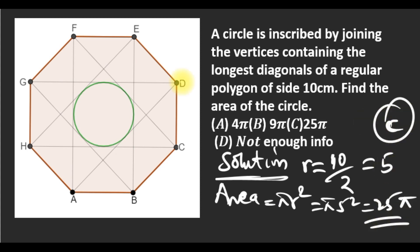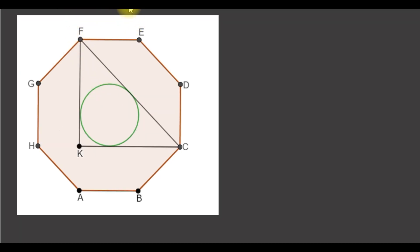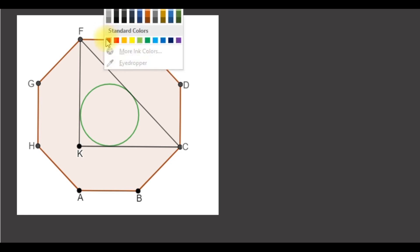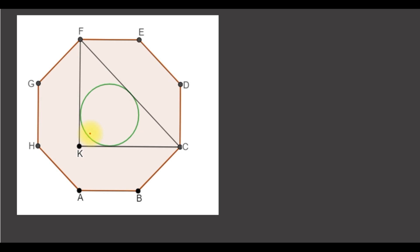So let me now analyze. The first thing we have to know is that whenever a circle is inscribed in a right triangle — taking a circle and inscribing it in a right triangle — we know that the radius is r.